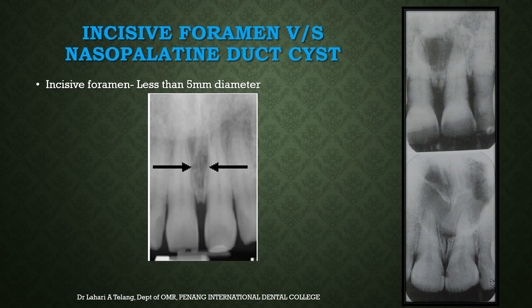Next, let us discuss the incisive foramen cyst, also called the nasopalatine duct cyst, and look at the differences between a normal incisive foramen and a cyst in that area. Generally a normal incisive foramen is less than 5 mm in diameter. Anything larger is considered pathological and must be investigated as a suspected nasopalatine duct cyst. In this image you can see a very large cyst in the maxillary anterior region with a nice sclerotic margin, arising from the incisive foramen area.